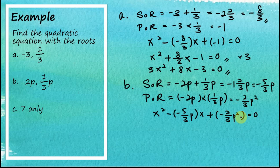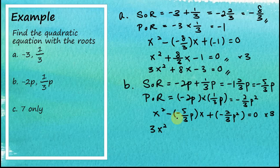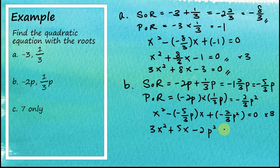To eliminate the fractions in part (b), multiply the whole equation by 3: 3x² + 5/p·x - 2 = 0. Multiplying further eliminates the p in the denominator, giving 3x² + 5x - 2p² = 0. So the quadratic equation for part (b) is 3x² + 5x - 2p² = 0.